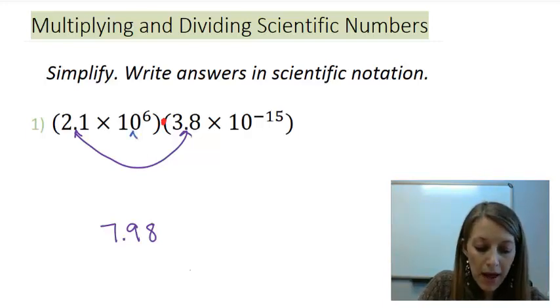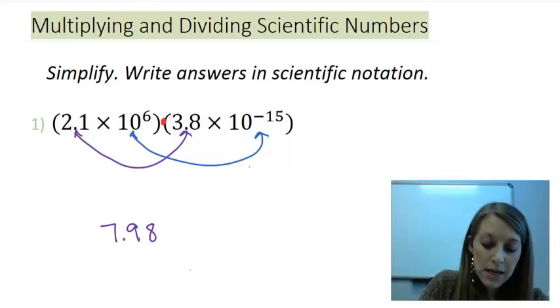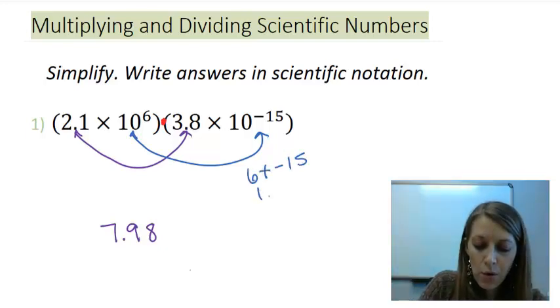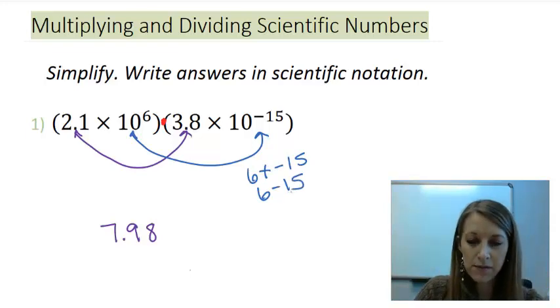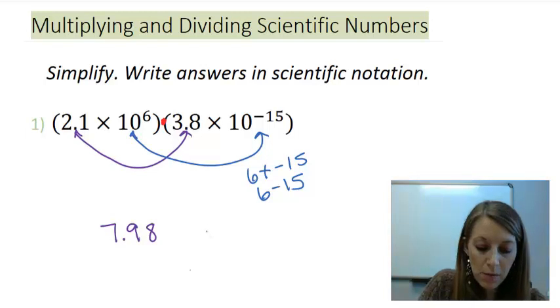And then I'm going to multiply my 10 to the 6 times 10 to the negative 15. The reason that this goes with the set of exponent videos is because I have the same basis, and I can use my properties of exponents to combine these exponents here. Since I'm multiplying my bases, I add my exponents, 6 plus a negative 15, or you can think of it as 6 minus 15. And 6 minus 15 gives me negative 9.